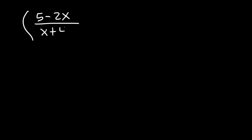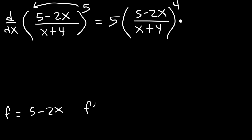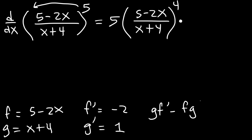Now find the derivative of 5 minus 2x over x plus 4, raised to the fifth power. This combines the chain rule and quotient rule. First apply the chain rule: move the exponent 5 to the front, keep the inside function the same, and subtract the exponent by 1 to get 4. Then multiply by the derivative of the inside using the quotient rule. f is 5 minus 2x, so f prime is negative 2. g is x plus 4, so g prime is 1.